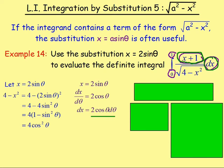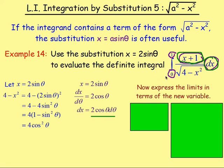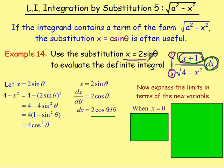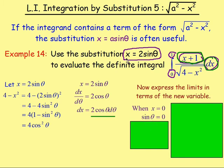If you have limits, you need to write them in terms of the new variable theta. For the lower limit, when x equals 0, substituting into x equals 2 sine theta gives 0 equals 2 sine theta, so sine theta equals 0, meaning theta equals 0.